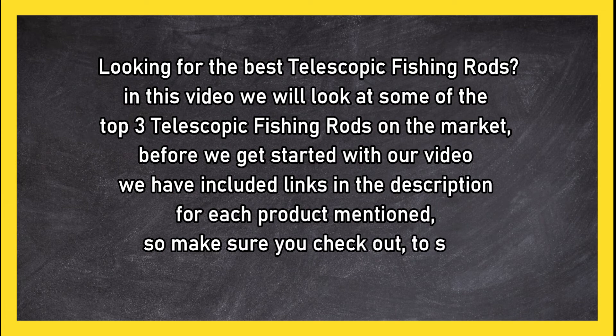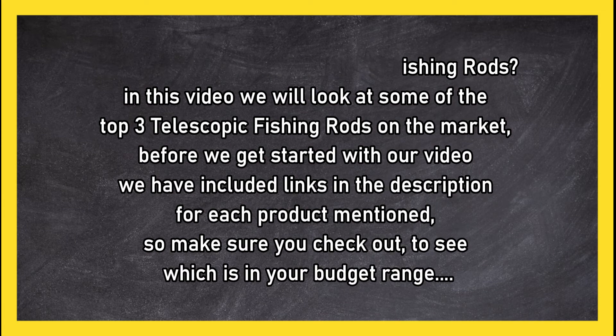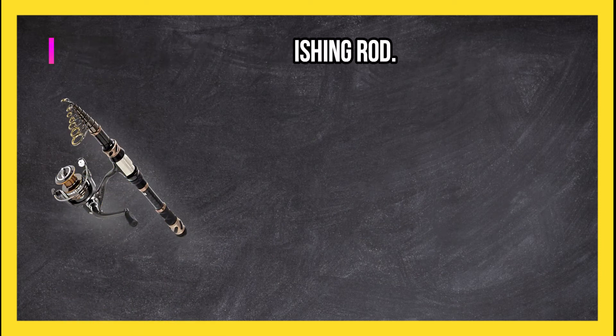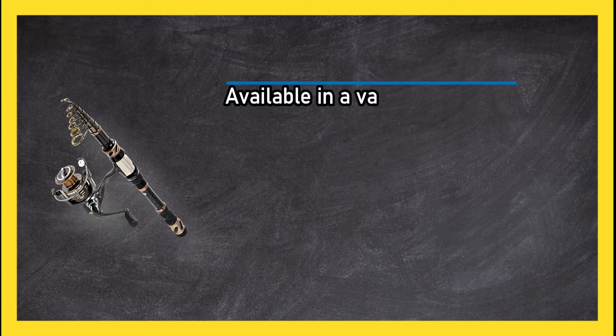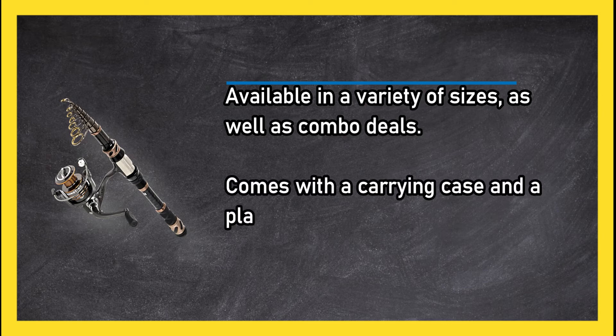So make sure you check out to see which is in your budget range. At number three, Plasino telescopic fishing rod. Available in a variety of sizes as well as combo deals. Comes with a carrying case and a plastic tip for guide protection. Easy to mount a reel onto it.